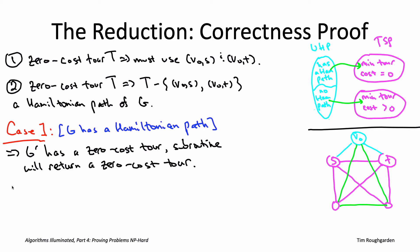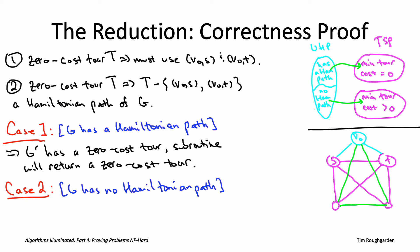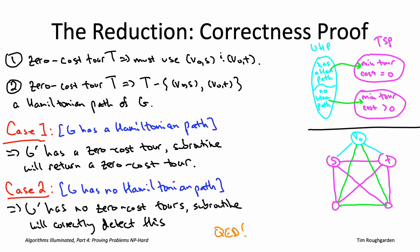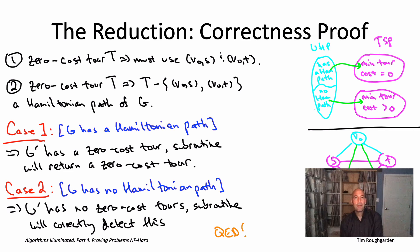Either way, the reduction works in both cases. That completes the reduction from the undirected Hamiltonian path problem to the TSP — because the former is NP-hard, so is the latter. You now know completely why the traveling salesman problem is NP-hard. Coming up next, we have one more example: we want to show that problems involving only numbers can also be NP-hard, such as the knapsack problem. See you then.